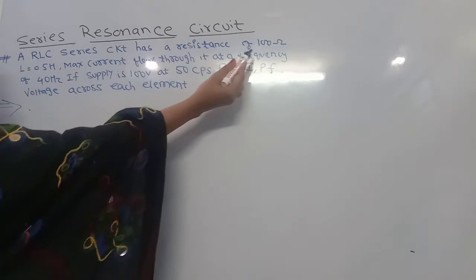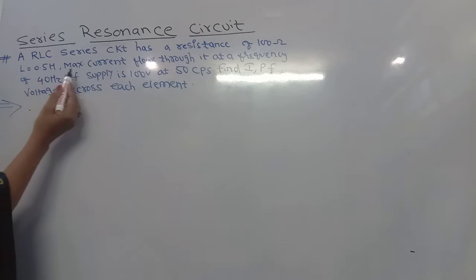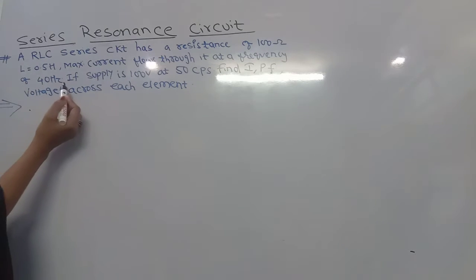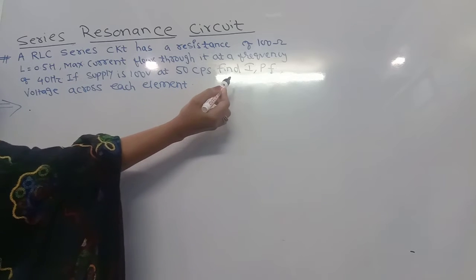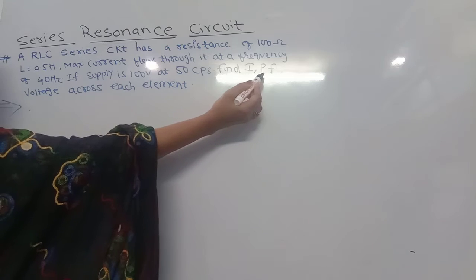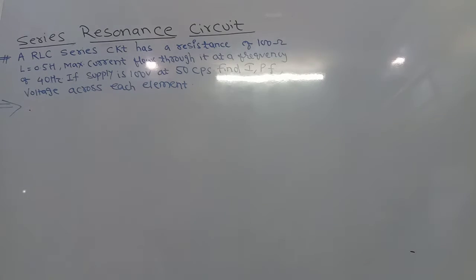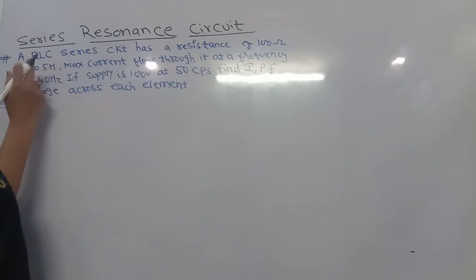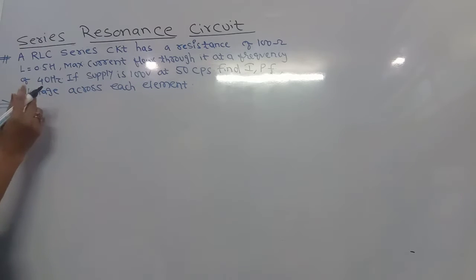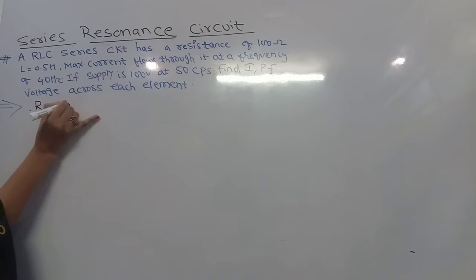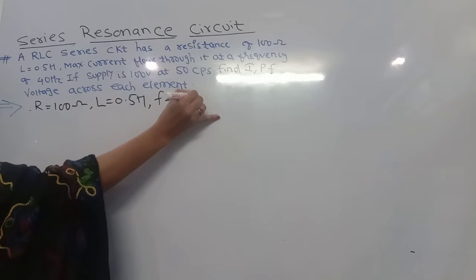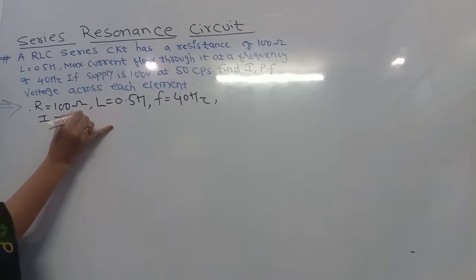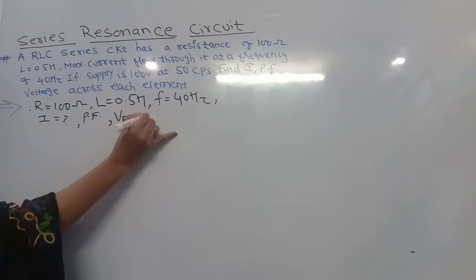An RLC series circuit has a resistance of 100 ohm, L equals 0.5 henry, and the maximum current flows through it at a resonance frequency of 40 hertz, with a supply of 100 volt at 50 cycles per second. We need to find: the current I, the power factor PF, and the voltage drop across each element — VR, VL, and VC.